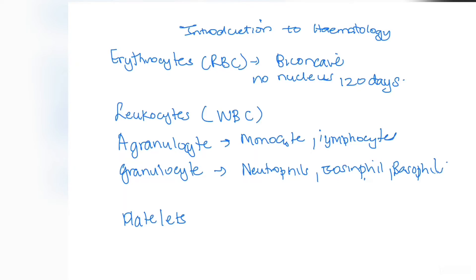Agranulocytes have different functions: monocytes form macrophages and are important in phagocytosis, clearing decaying or dead cells. Lymphocytes — your B and T lymphocyte cells — play an important role in the specific immune response.